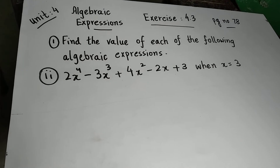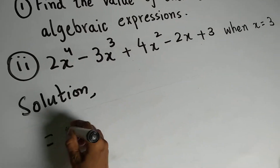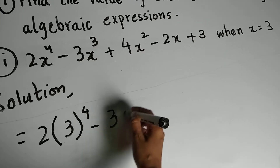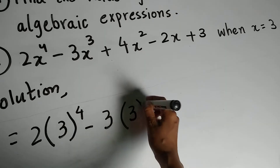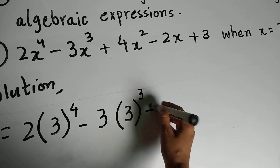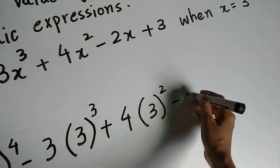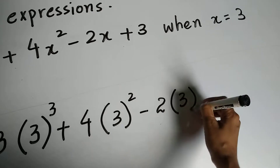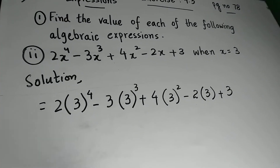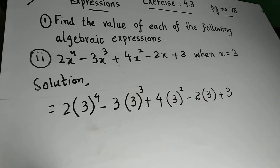Let's go to the solution. You write the expression as: 2 times (3) to the power 4, minus 3 times (3) cubed, plus 4 times (3) squared, minus 2 times (3), plus 3. We have now substituted x with 3 everywhere in the expression.